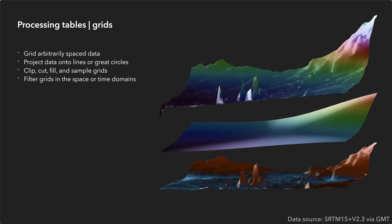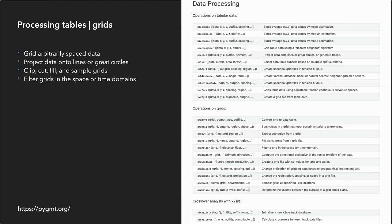PyGMT's capabilities for processing tables and grids include gridding arbitrarily spaced data, projecting data onto lines or great circles, clipping, cutting, filling, and sampling grids, and filtering grids in the space or time domains. PyGMT's complete suite of data processing functions are fully documented at pygmt.org.